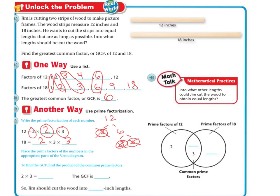So to place the prime factors and the numbers in the appropriate parts in the Venn diagram. So we have 2, and they also have in common another 2, and 3, and they have another 3. So these are the common prime factors, which is 2 and 3. And 2 times 3 is 6, therefore the greatest common factor is 6. So Jim should cut the wood into 6-inch lengths.